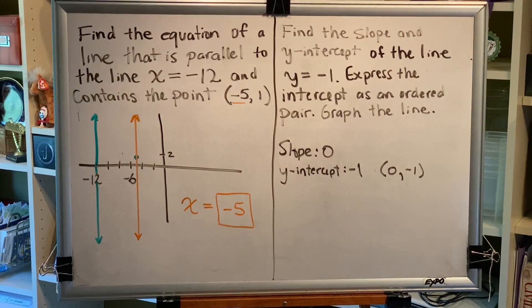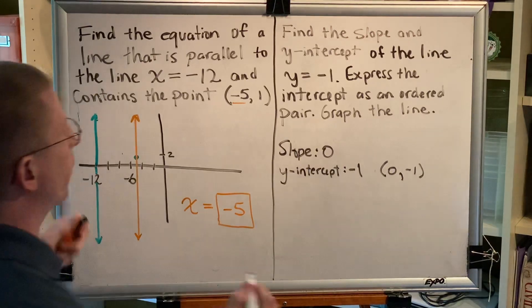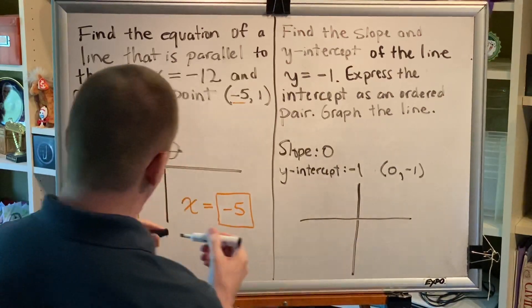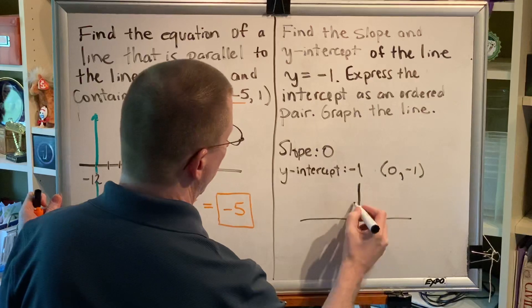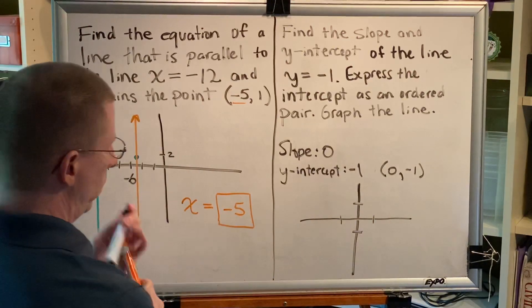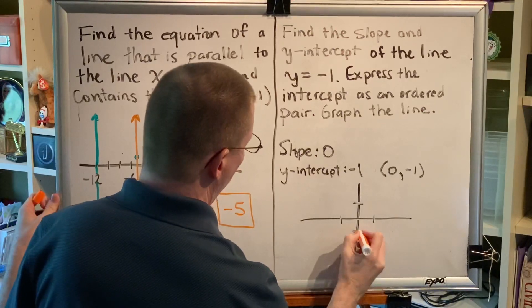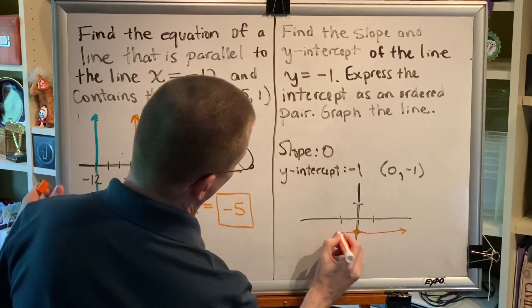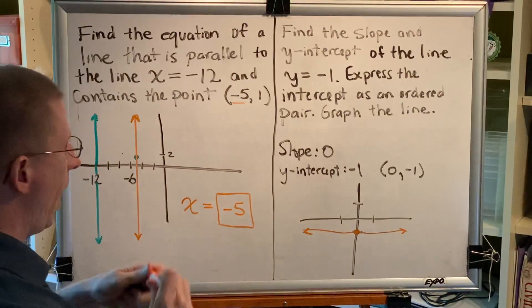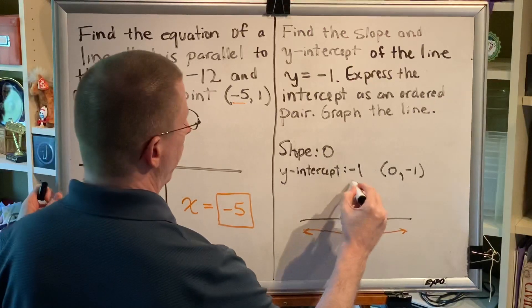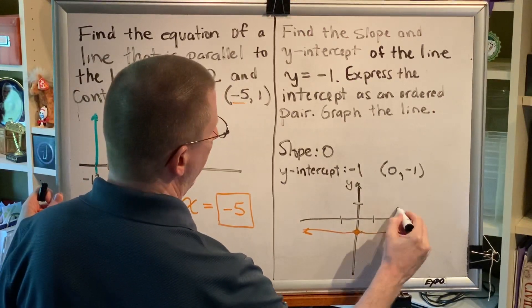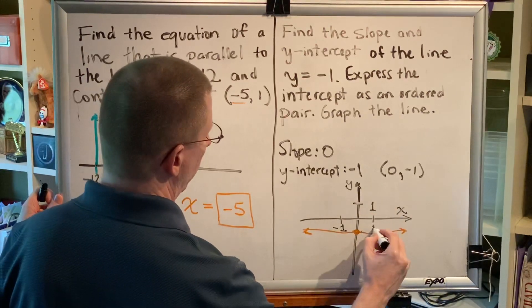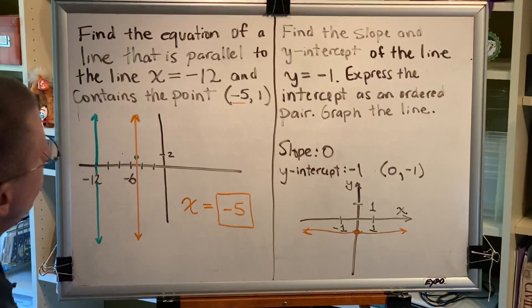So we found the slope and the y-intercept. The only thing left to do now is to graph the line. We know that it's a horizontal line, and we know that the y-intercept is negative 1. So we'll plot the y-intercept first and draw a horizontal line. As with any graph, it should be labeled with a y on the positive side of the y-axis, an x on the positive side of the x-axis, as well as a scale.